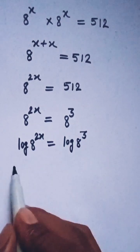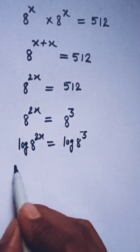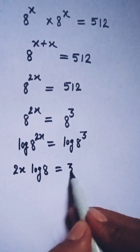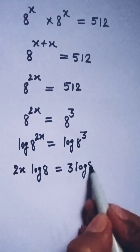Now this 2x will come in front of the log 8, so we have 2x log 8 equals 3 log 8.